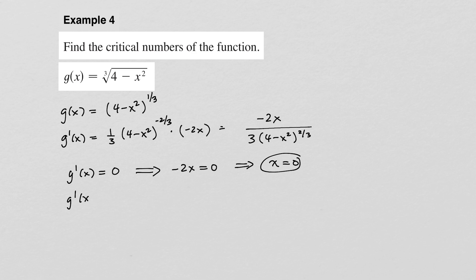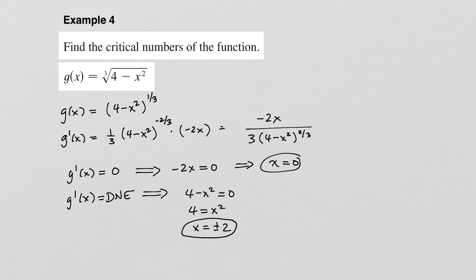We also need when the derivative does not exist, which occurs when the denominator equals zero. Setting 4 minus x squared equal to zero gives x squared equals 4, so x equals plus or minus 2. These are also critical numbers. The reason all three — x equals 0, x equals 2, x equals negative 2 — are critical numbers is because they are all in the domain of the function. If any of these had not been in the domain, they could not be critical numbers.